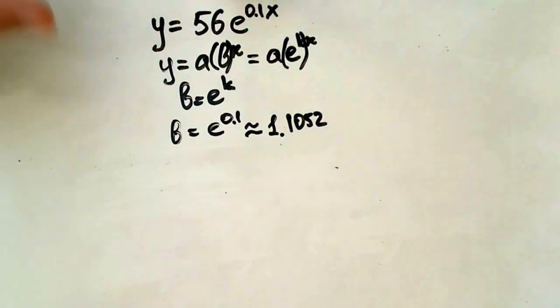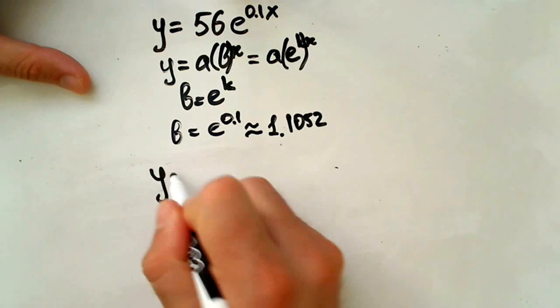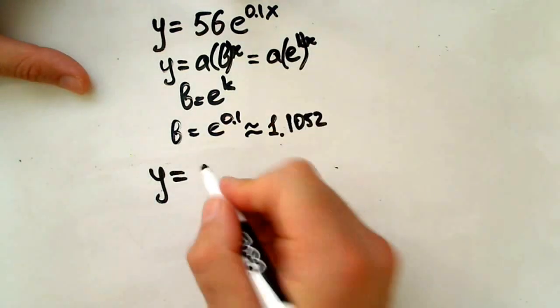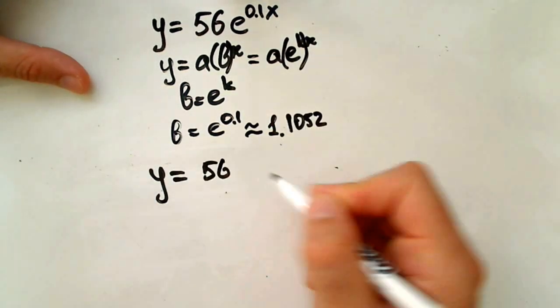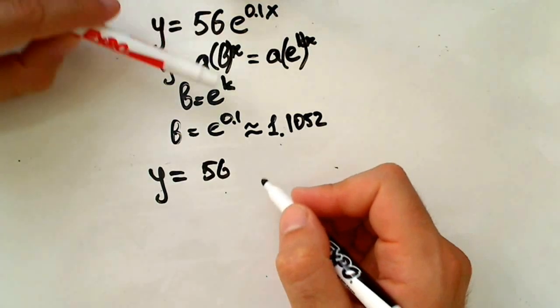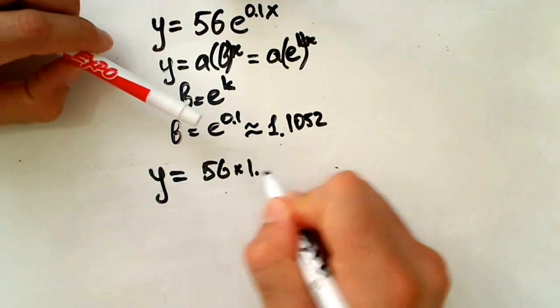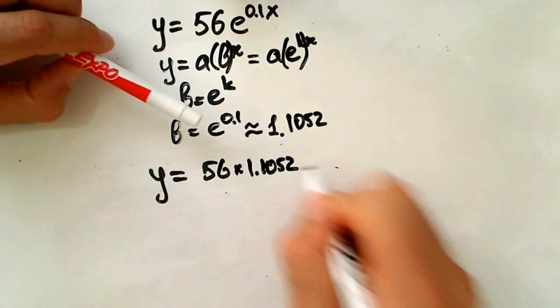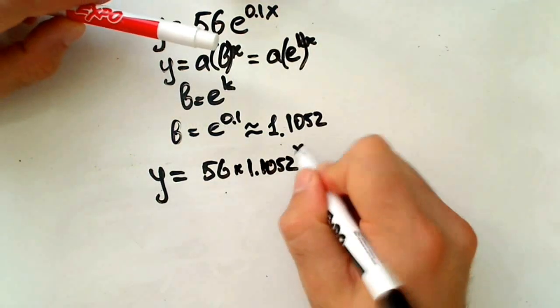And now what is our function? It actually looks like a which is 56 times our b which we found to be 1.1052 to the x.